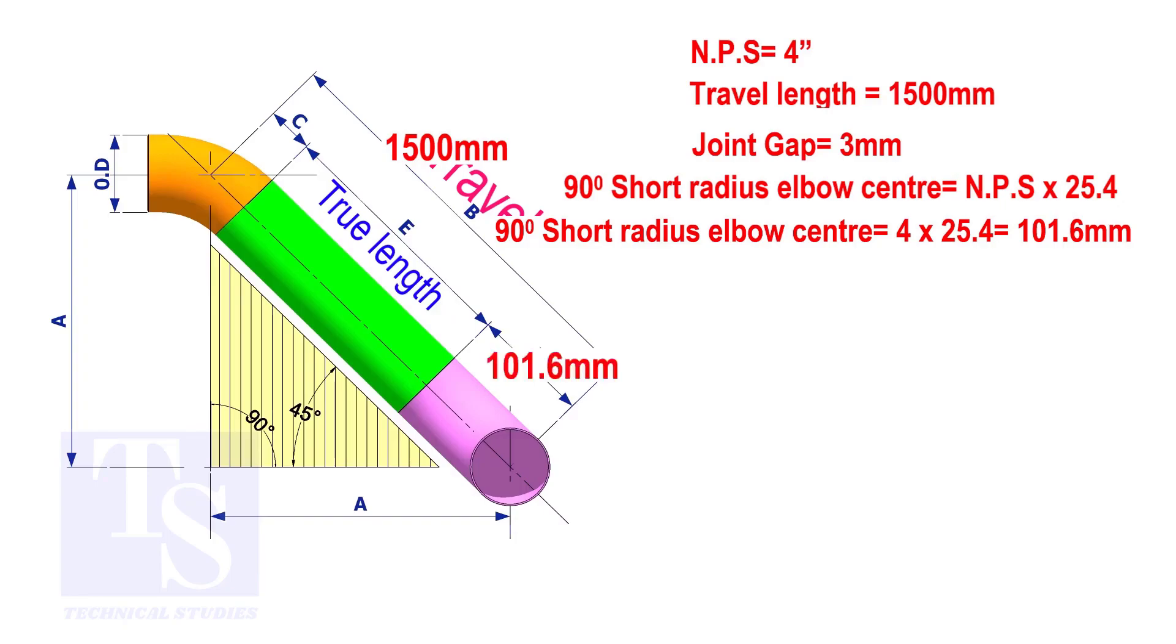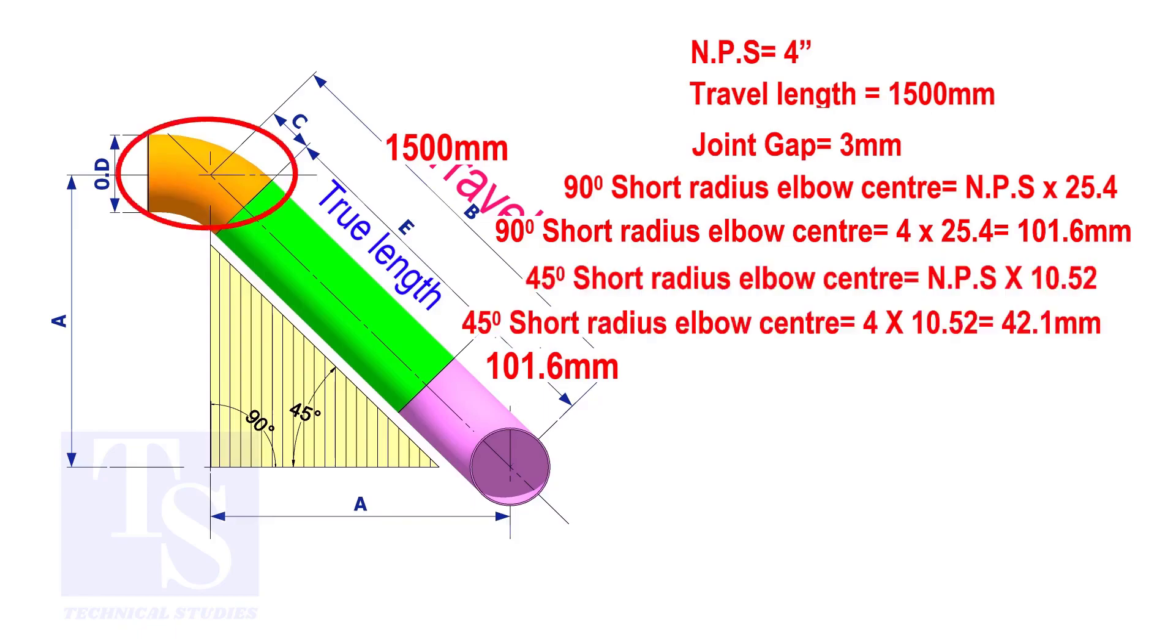To calculate the elbow center of a 45 degree short radius elbow, multiply the nominal pipe size by 10.52. The answer is 42.1 millimeters.